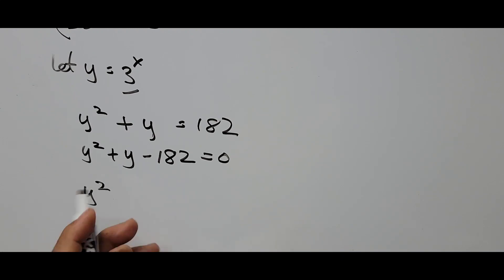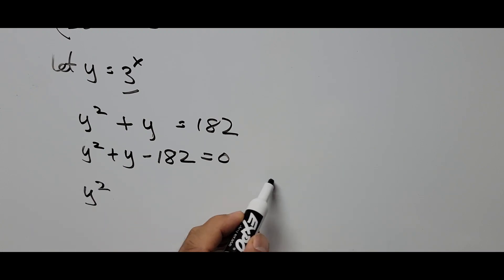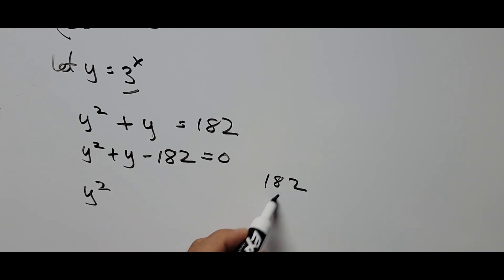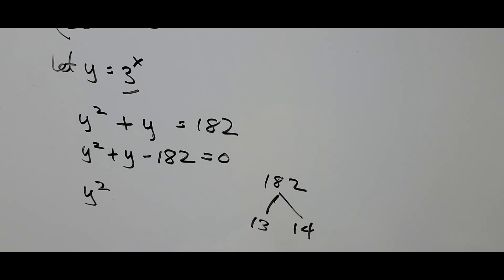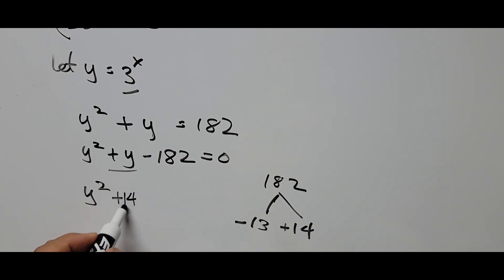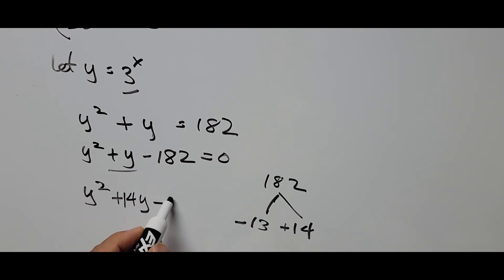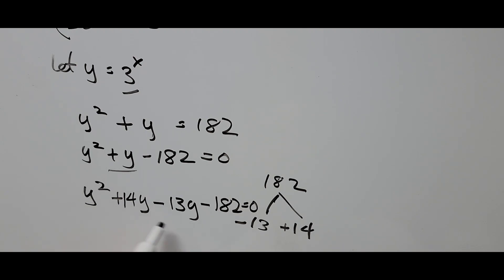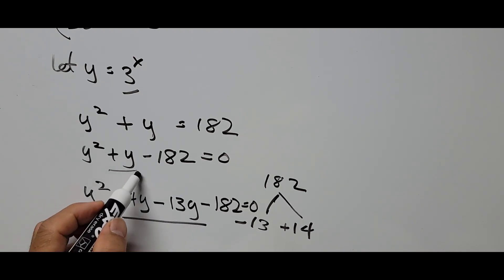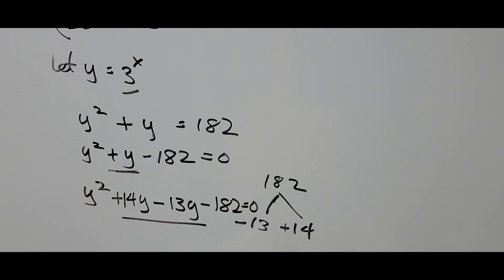We need to factor 182. The factors are 13 and 14, since 14 times 13 equals 182. Since the middle term is positive y, we use plus 14y minus 13y. Note that 14y minus 13y equals y, so the equation is unchanged: y squared plus 14y minus 13y minus 182 equals 0.